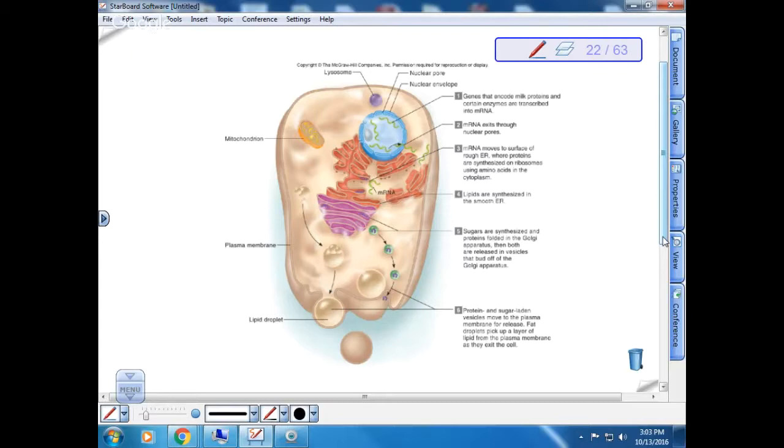So for example, the genetic material that codes for casein is found in males and females but only expressed in females. So this is the nucleus. Inside the nucleus we have the DNA and some of those pieces of DNA code for protein.